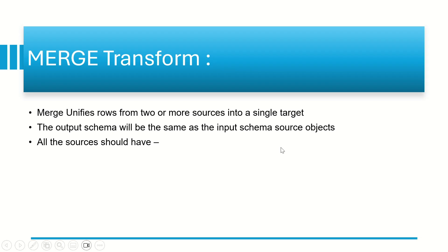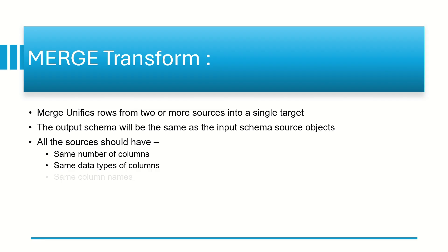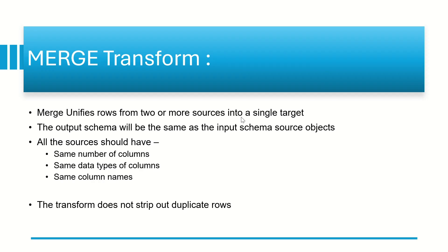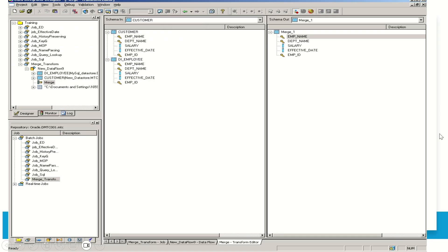All sources should have the same number of columns. If you want to merge two tables, the columns should be the same in both tables. The data type for each column should be the same, and the column names should also be the same. Only then will the data be merged, and Merge Transform will not produce any duplicates.